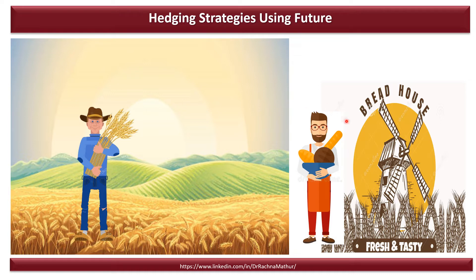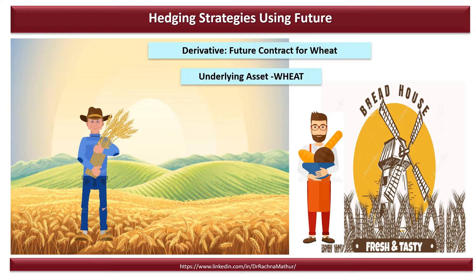In this example the underlying asset is wheat. Both the wheat producer and the mill owner sign a future contract for wheat. Mr. John the wheat farmer took a short hedge position. A short hedge involves a short position in a futures contract. A short hedge is appropriate when the hedger already owns an asset and expects to sell it at some time in the future. Here the farmer has decided to sell the wheat to the bread mill owner, with quality, quantity, price, and date of expiry predefined in the contract. It is also important to remember that a short hedge can be used when an asset is not owned right now but will be owned at some time in the future.